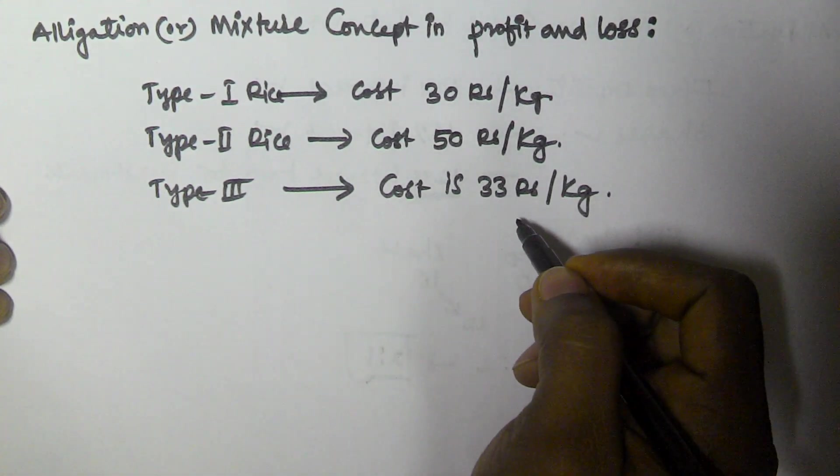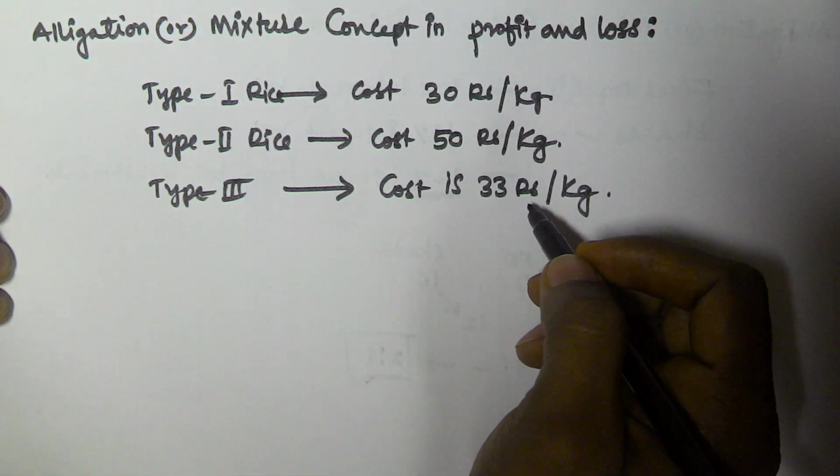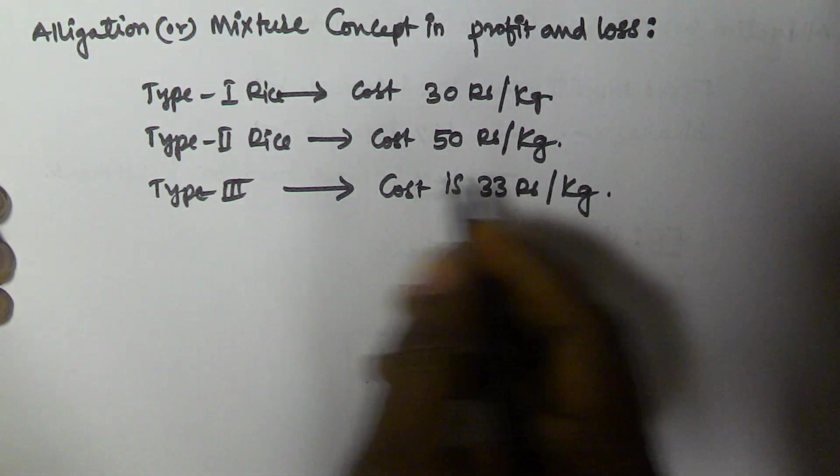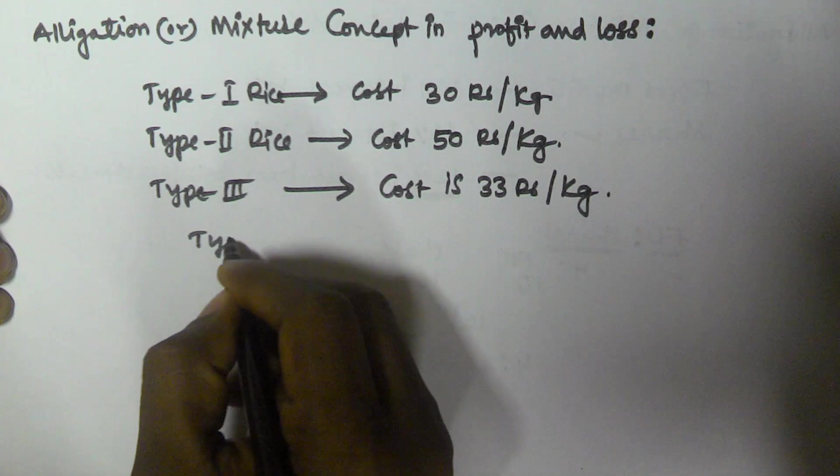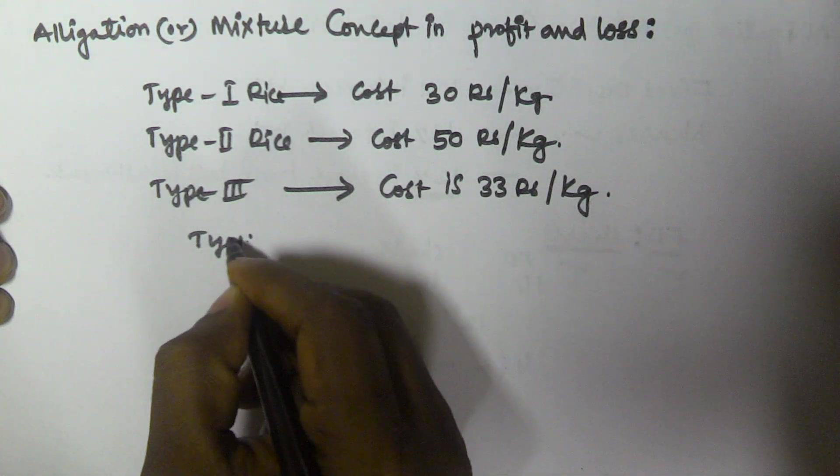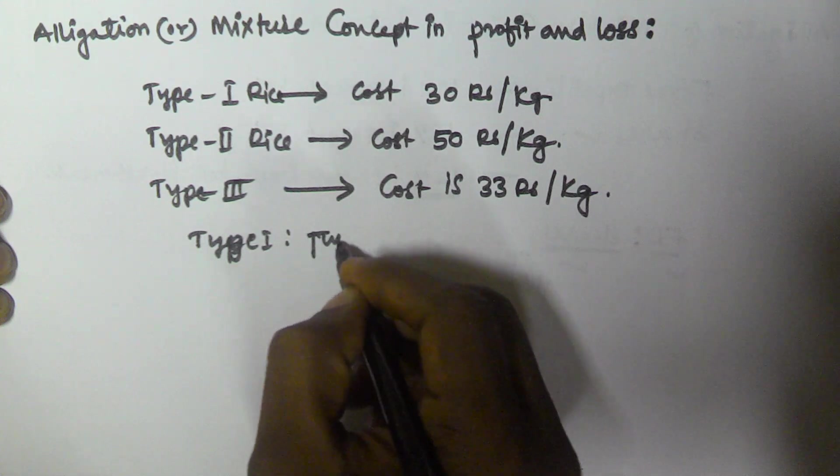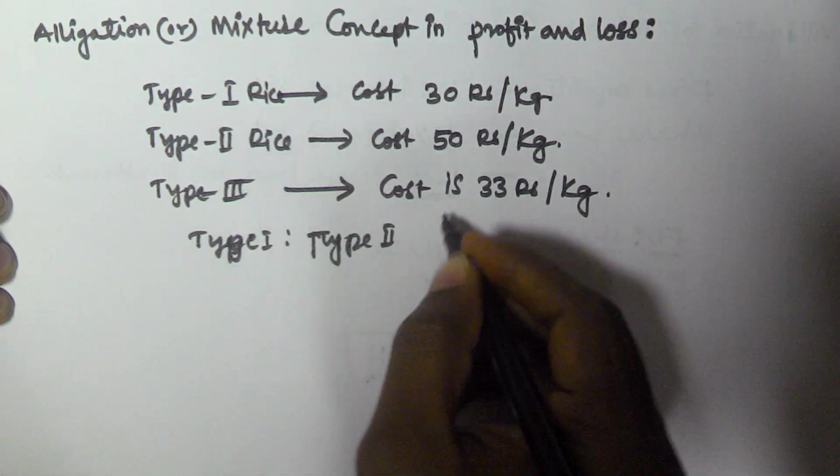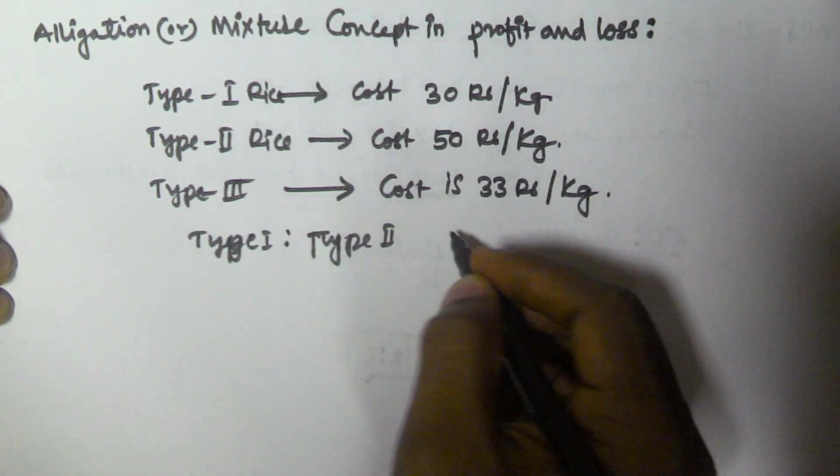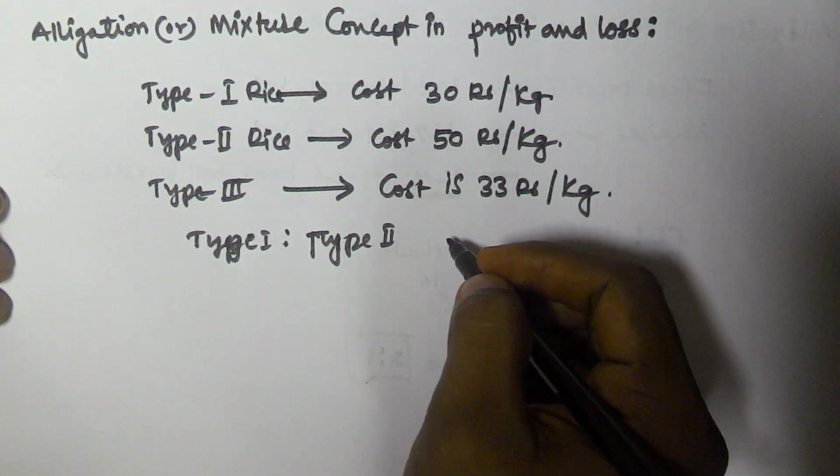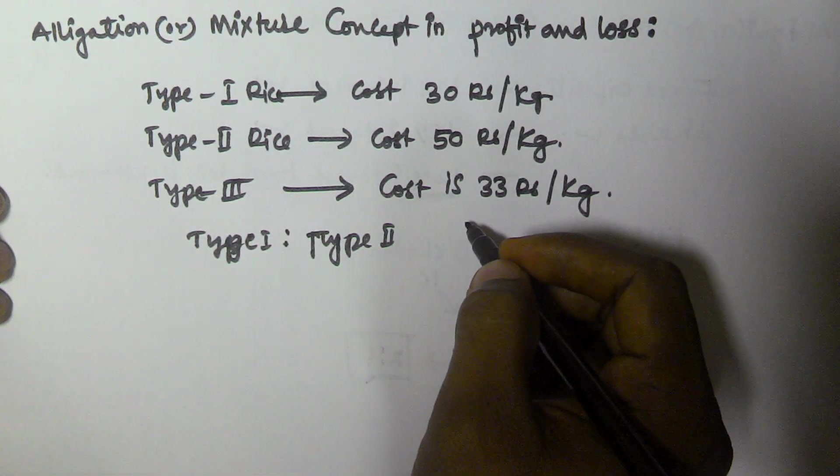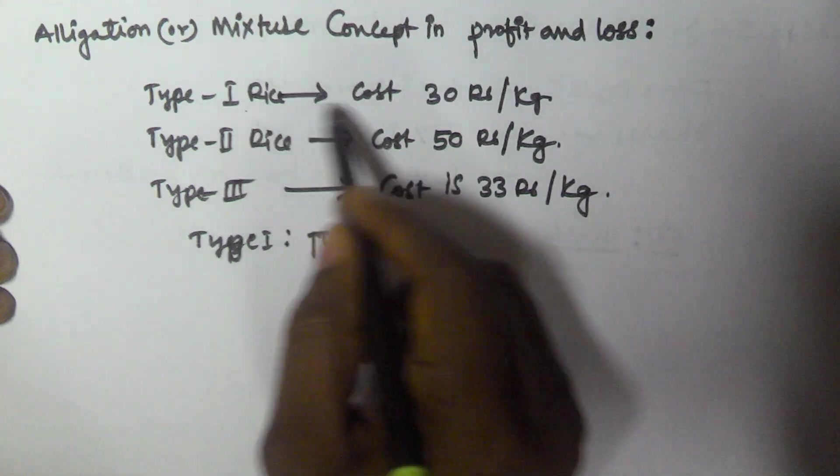Now find the ratio in which Type 1 is added to Type 2 to get Type 3. So I hope the problem is clear.